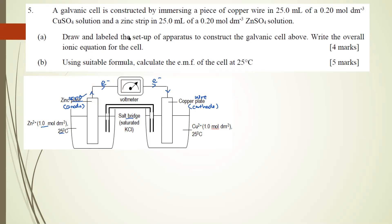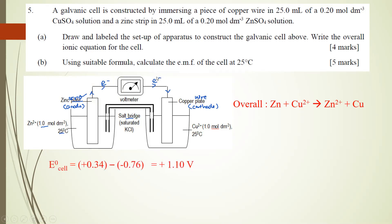The overall ionic equation for the cell is: Zn + Cu2+ → Zn2+ + Cu. For part (b), calculate the EMF at 25°C. The E°cell = +0.34 − (−0.76) = +1.10 V. However, since the concentration is not 1.0 mol/dm³, you need to apply the Nernst equation to calculate the actual EMF.